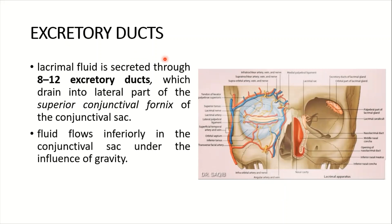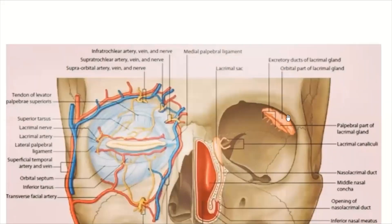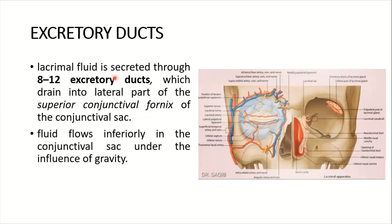The excretory ducts are 8 to 12 in number. Lacrimal fluid is secreted through these 8 to 12 excretory ducts, which drain into the lateral part of the superior conjunctival fornix of the conjunctival sac. The fluid flows inferiorly in the conjunctival sac under the influence of gravity.